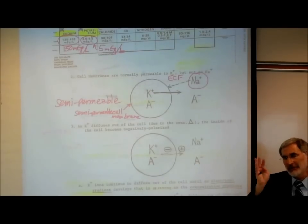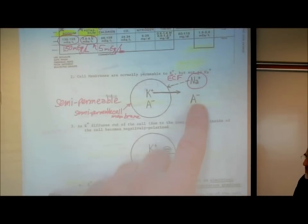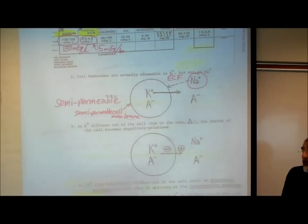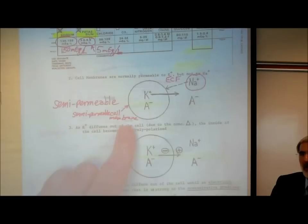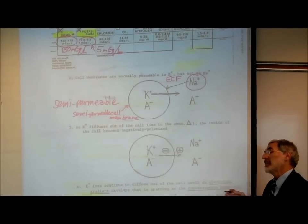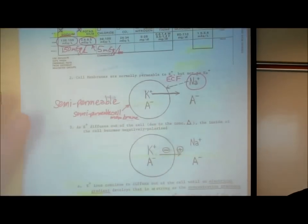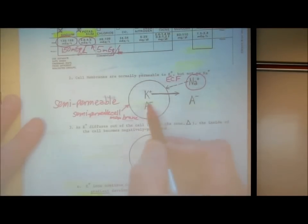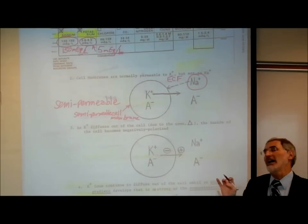The major negative charge chemical in the extracellular fluid is chloride. There's a lot of negatively charged chloride on the outside of the cell that would like to flow in, but the chloride ion channels are normally closed. The major source of negativity on the inside of the cell is negatively charged protein. There's also negative-charge phosphate, but the major source is negatively charged protein — and proteins are too big to get across cell membranes.